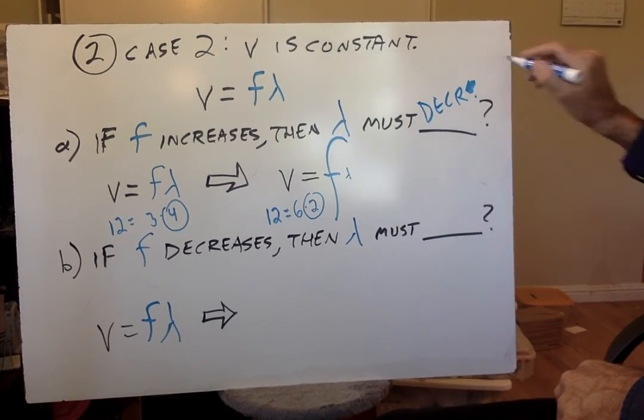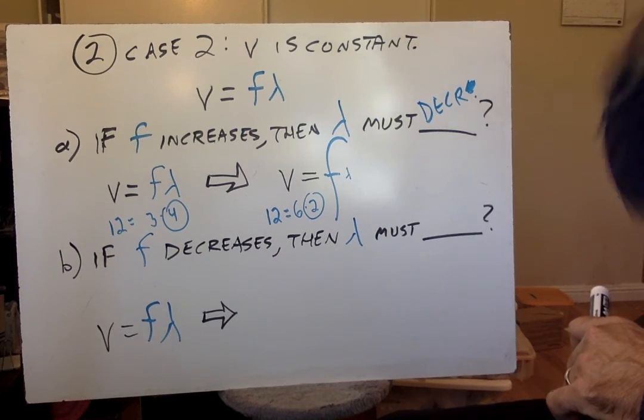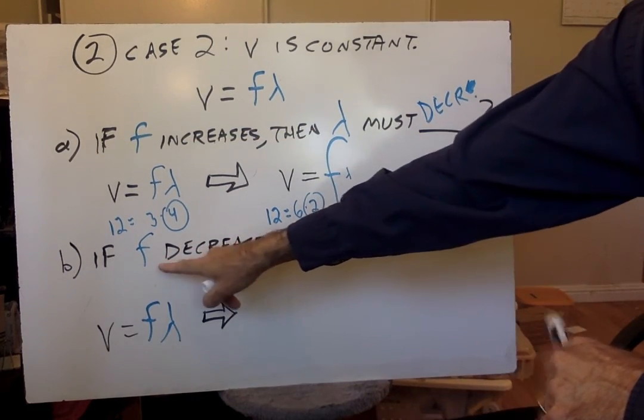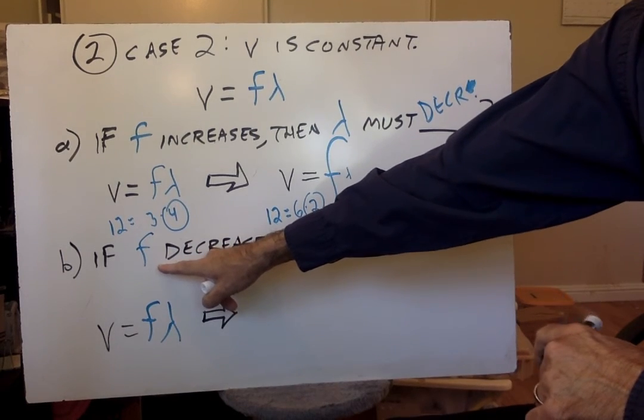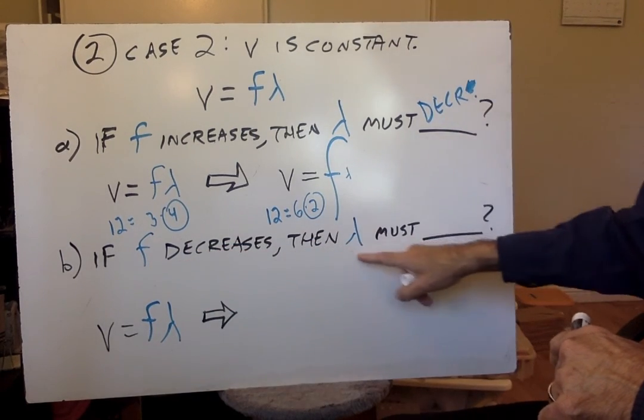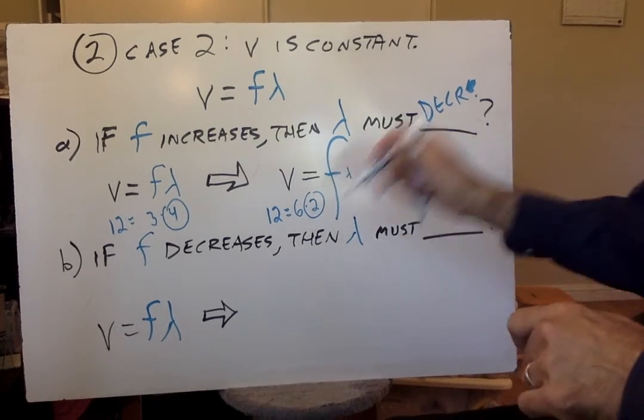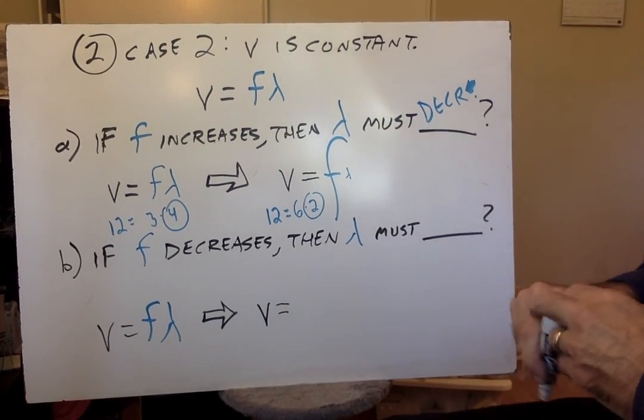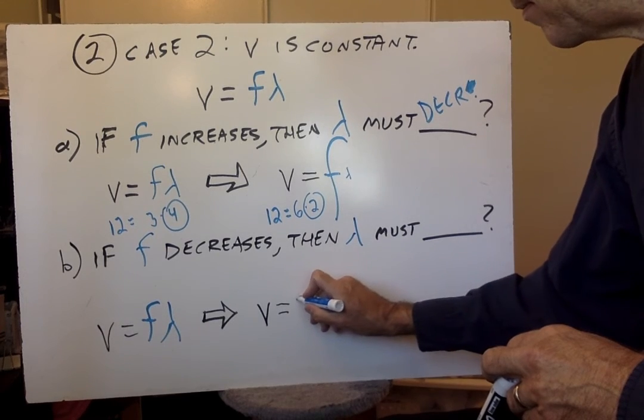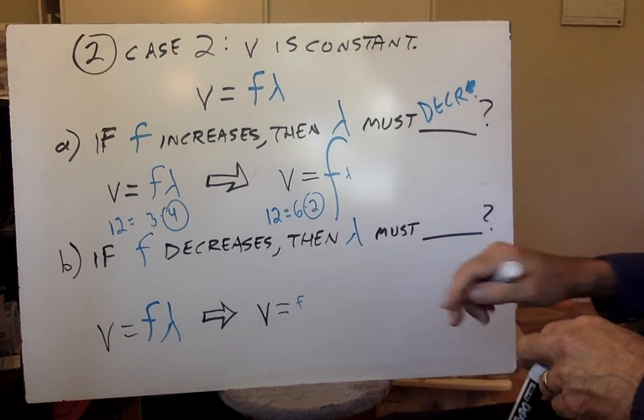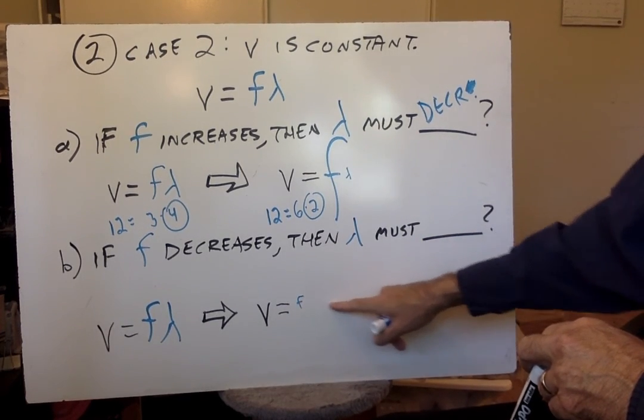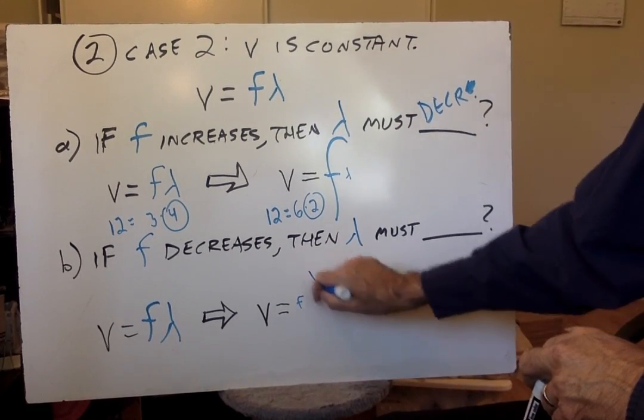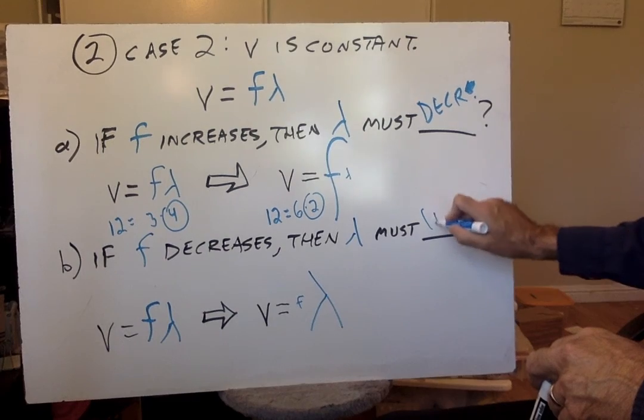What if we do the opposite? We'll go faster here because this should be obvious now. If frequency decreases, then wavelength must do what? So the way you would write this with colors and pictorially is like this. We're making the frequency smaller. But we need the two multiplied together to equal the same speed. So what has to happen to the wavelength? It has to get bigger. So put increase here.